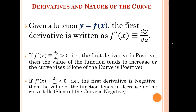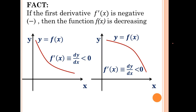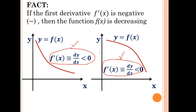If f prime x or dy/dx is less than zero — that is, the first derivative is negative — what it means is that after differentiating the function y with respect to x, if the value of the first derivative is less than zero, it can be negative one, negative two, and so on. Then the value of the function tends to decrease, or the curve falls. So if the first derivative is negative, the slope of the curve is also negative — it will be downward sloping. If f prime x is negative, then f(x) is decreasing, as seen in both diagrams.